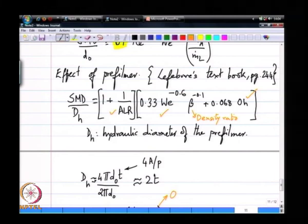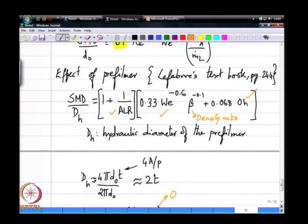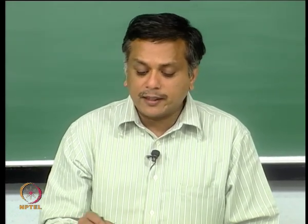Looking at Lefebvre's correlation: as the air-to-liquid ratio increases, the term 1/ALR decreases, meaning Sauter mean diameter decreases. However, even for an infinite air-to-liquid ratio, the pre-multiplier (1 + 1/ALR) only tends towards 1, so there is a limiting performance — increasing air ratio does not yield benefits beyond a certain ALR. Typically for a classical or pre-filming air blast atomizer that limit is at about 10 percent ALR; beyond about 10 to 15 percent, more air does not give the benefit of that increased energy input in terms of reduced drop size.